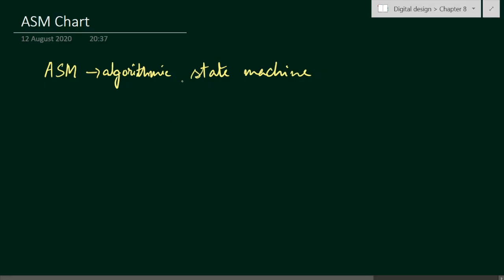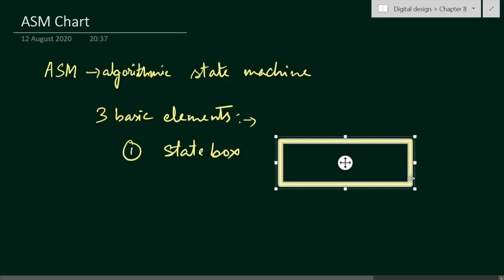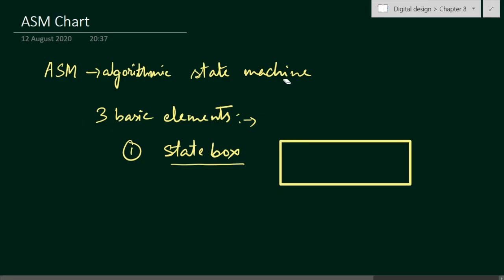There are three basic elements in an ASM chart. The first is the state box, which has a rectangular shape. It will have some inputs — suppose here we have one input X — and it will have some output. The state is denoted with capital S.